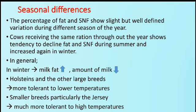The next factor is seasonal differences. The percentage of fat and SNF shows slight but well-defined variation during different seasons of the year. Cows receiving the same ration throughout the year show a tendency for fat and SNF to decline during summer and increase again in winter. In general, in winter, milk fat is high and the amount of milk is low. Holstein-Friesian and other large breeds are more tolerant to lower temperatures, while smaller breeds, particularly the Jersey, are much more tolerant to high temperatures.